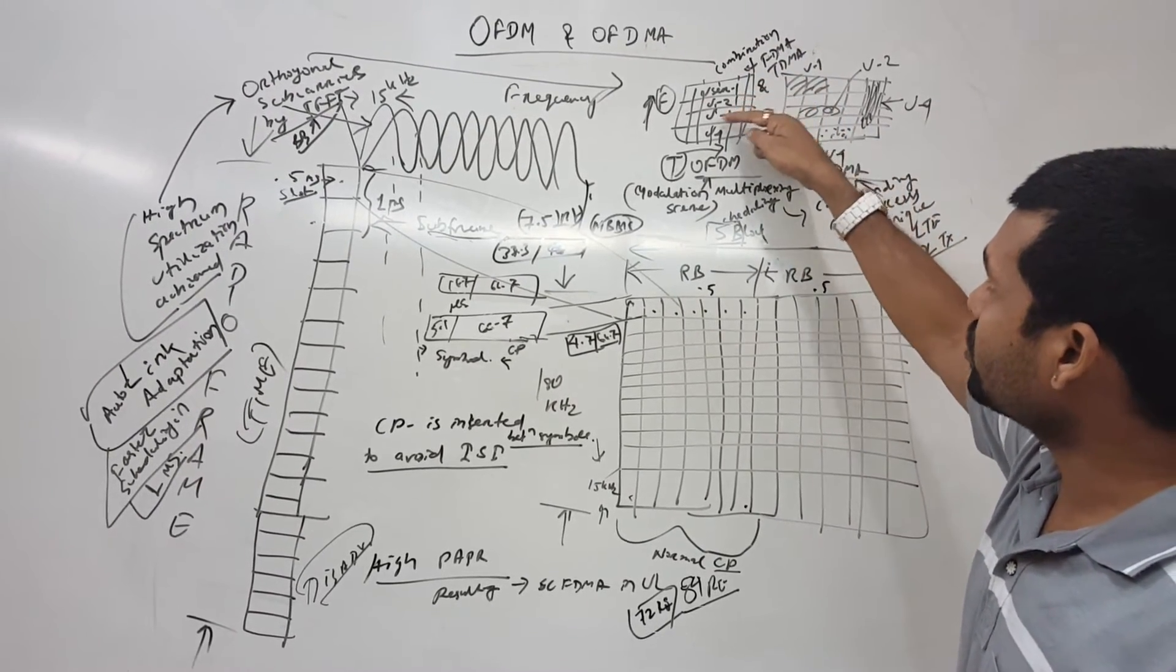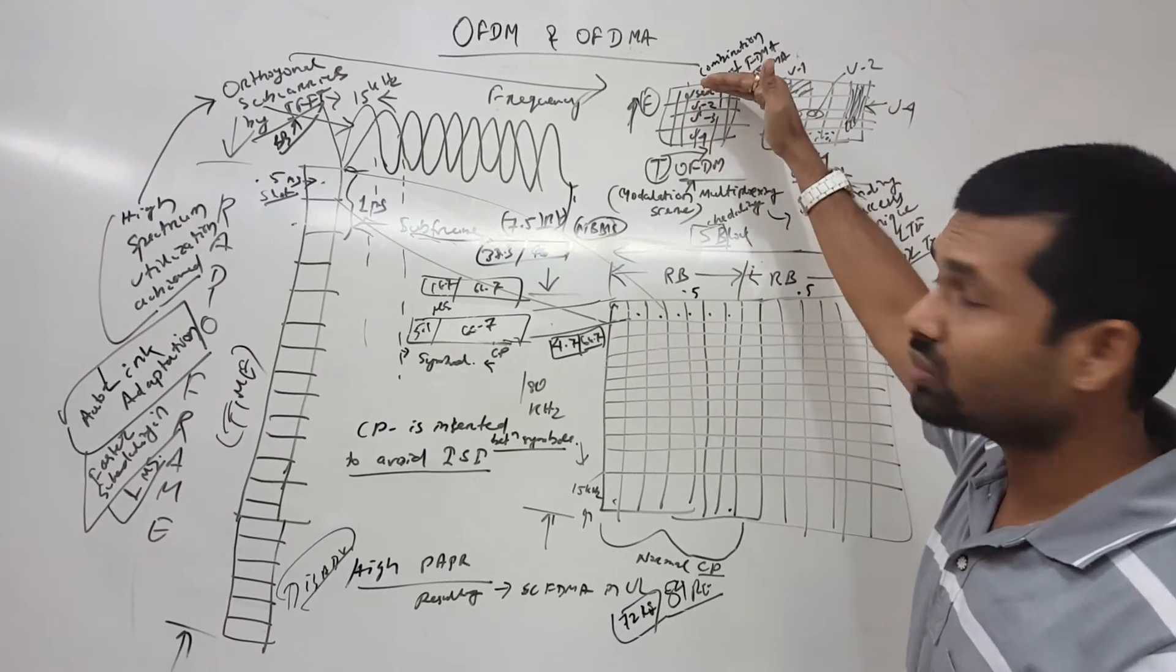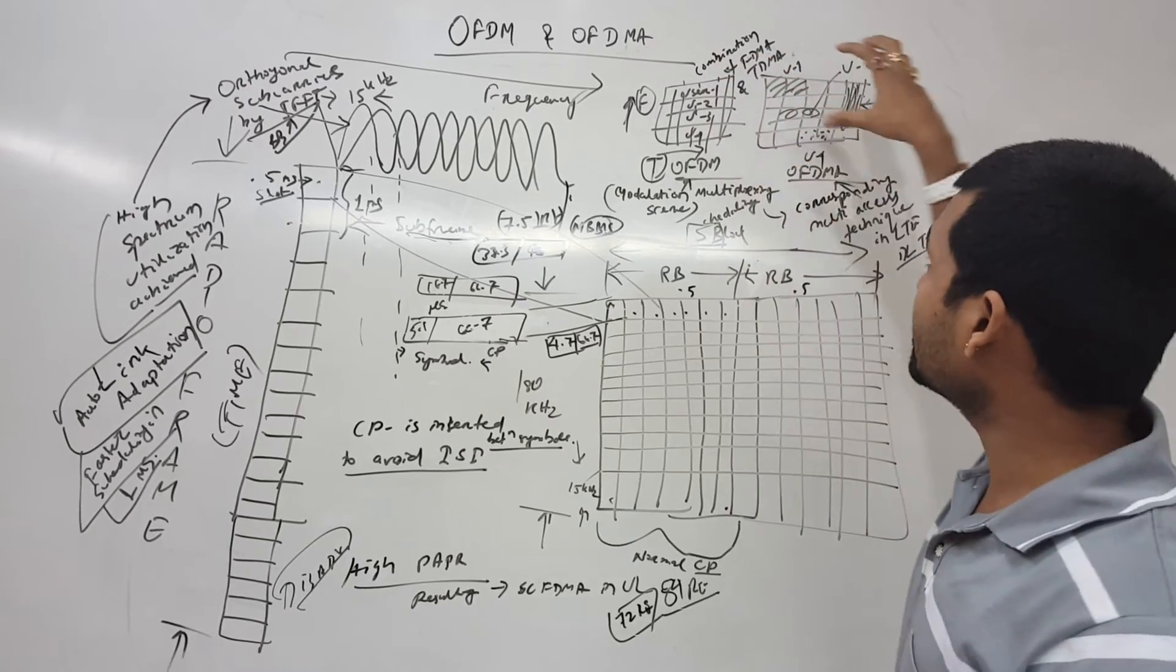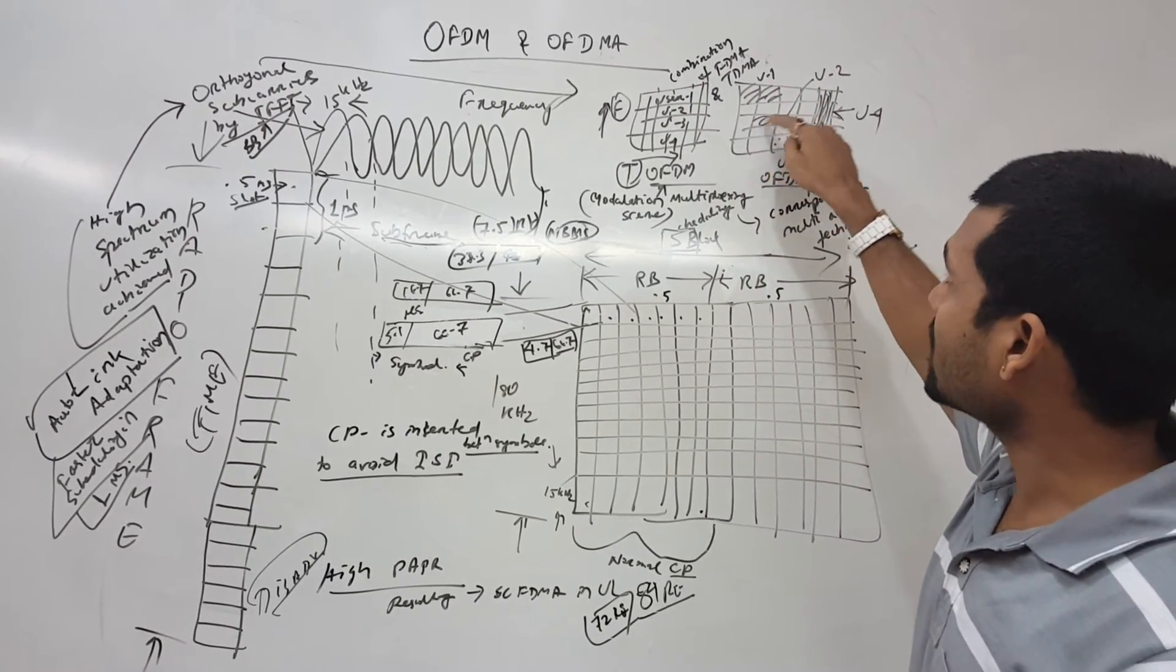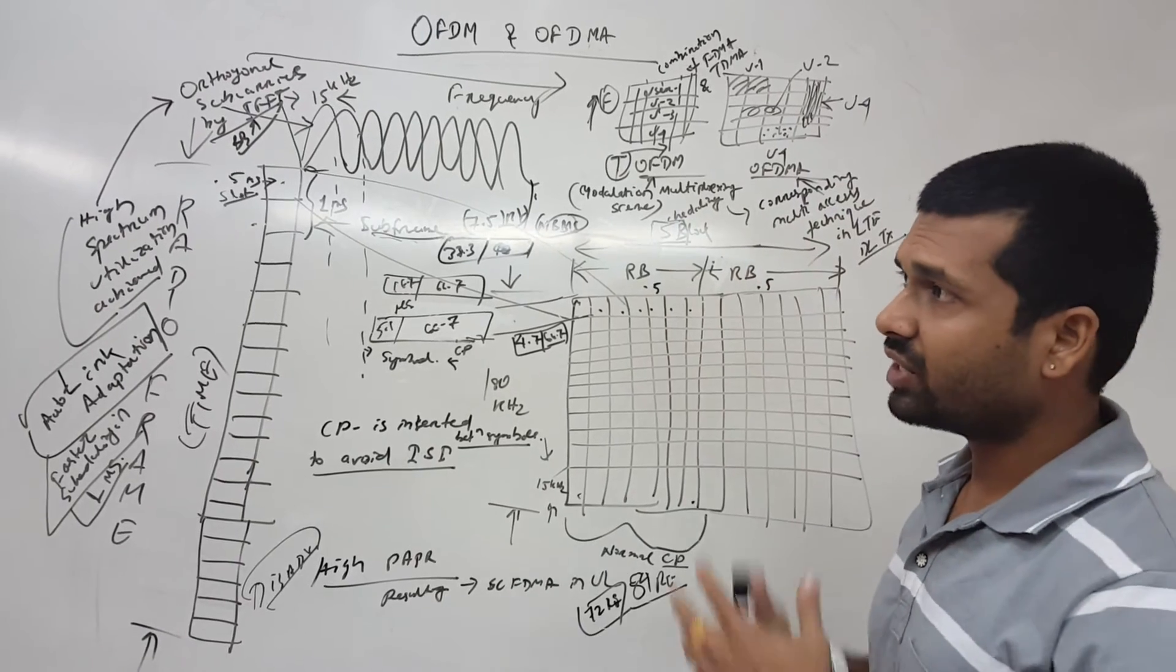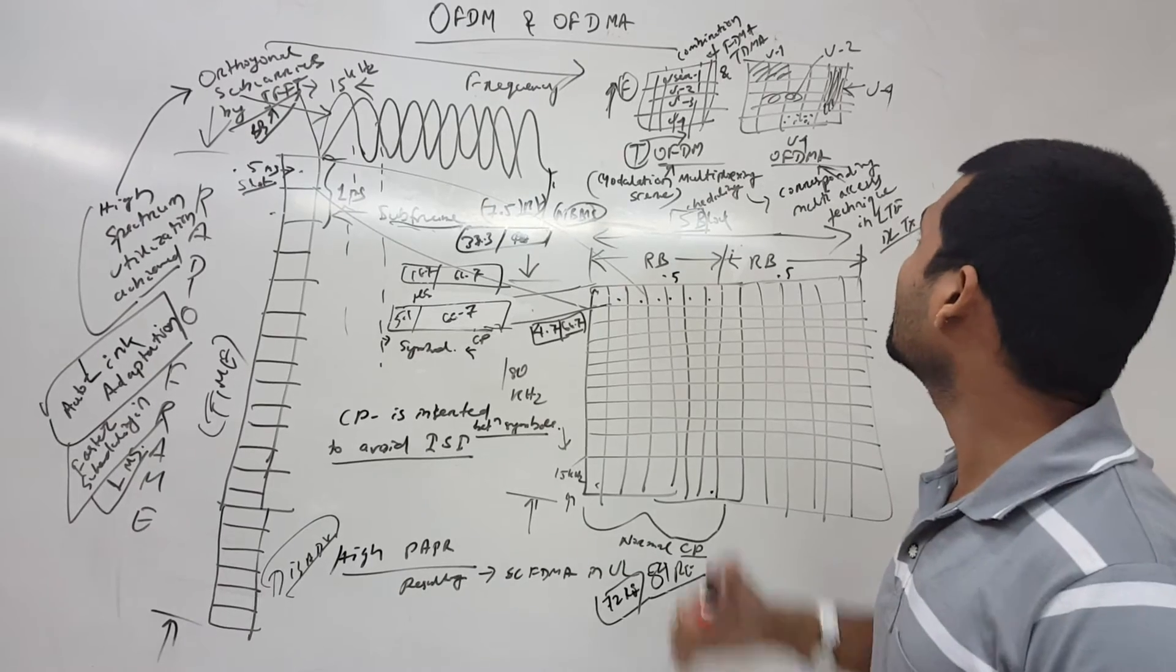You can see user 1, user 2, user 3, user 4 use particular frequency in a particular time. But in OFDMA, we can use the resources as per the requirement. We have very intact resource utilization, that's why you have better spectral efficiency.